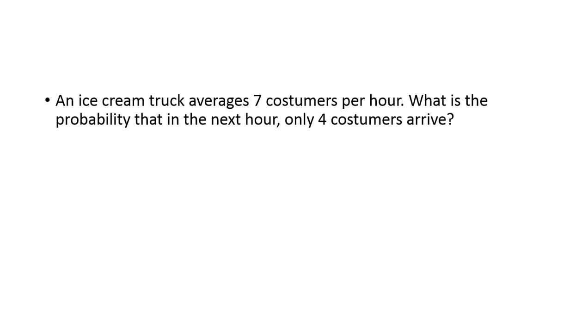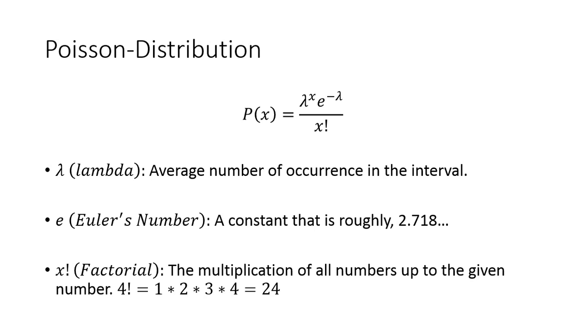Another example of this would be an ice cream truck. If an ice cream truck says they average about seven customers per hour, then we want to know what's the chances that only four customers would arrive at that time. This doesn't have a probability, there's not a 50% chance that this many people show up, that's not normally distributed on either side. What we're saying is that it kind of peaks at seven and then it falls down, and we want to know what's it going to be on either side.